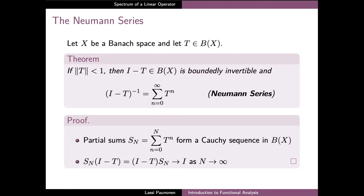In the second part we can verify that if we compose the partial sum S_N with the operator I minus T from either side, we then get an operator which converges to the identity operator on X. We can finally argue through the uniqueness of the limit of a convergent sequence that the Neumann series is really the inverse of I minus T.